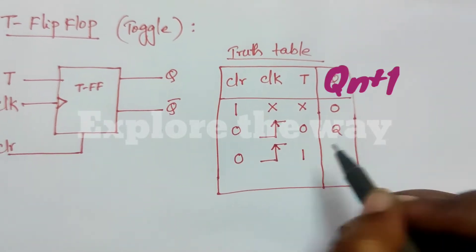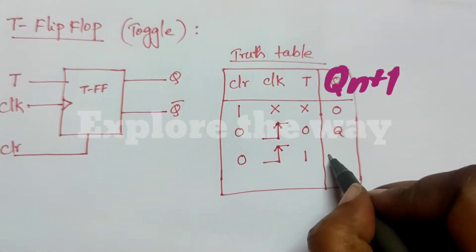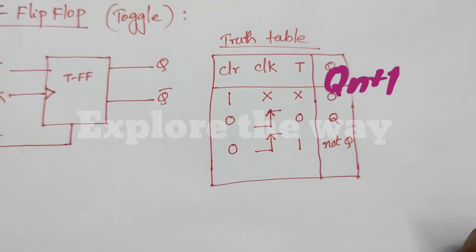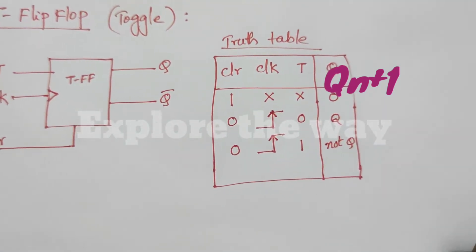And if T is 1, its output will be Q bar or complement of Q. You can write Q bar also.